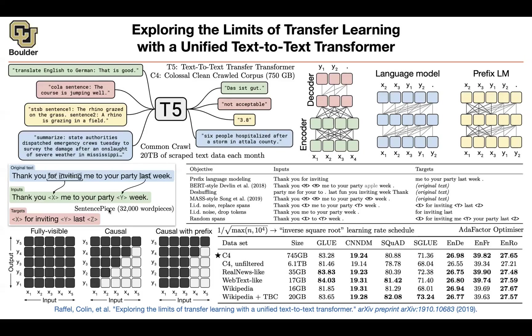Usually papers in deep learning and machine learning are around six to seven pages. This one is more than 50 pages because it's comparing all of these methods to each other. The cool thing about T5 is that you are putting a lot of different problems under the same umbrella, which is the next word prediction task.